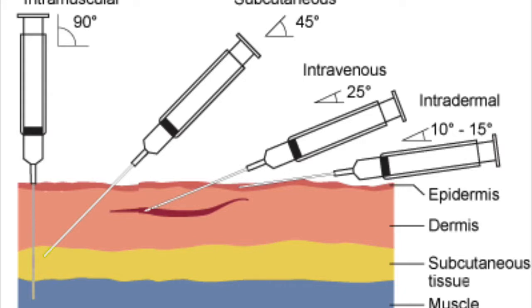Now we see intramuscular and intradermal. These two are just the opposite of each other. One is at right angles to the skin and the other is almost parallel to the skin. Intramuscular - why is it 90 degrees, you might ask?